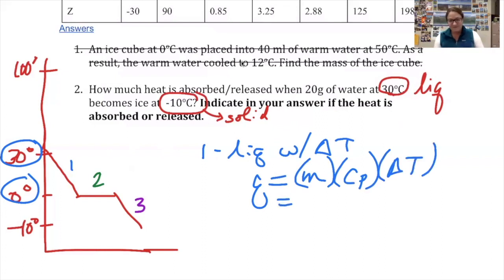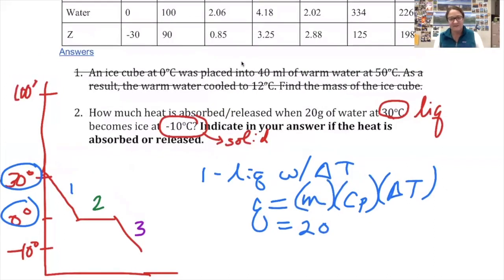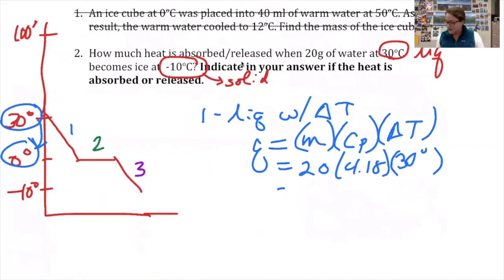The mass of water is 20. At this point it's liquid water, so I'm going to use the specific heat of liquid, which is 4.18. The change in temperature from 30 to zero degrees is 30. Now I'm going to multiply those numbers on my calculator: 20 times 4.18 times 30 degrees gives me 2508 joules for step number one.